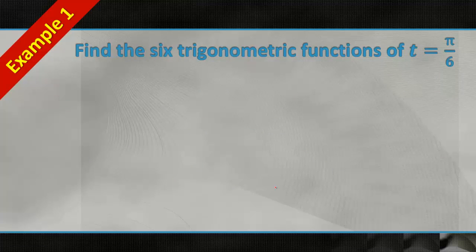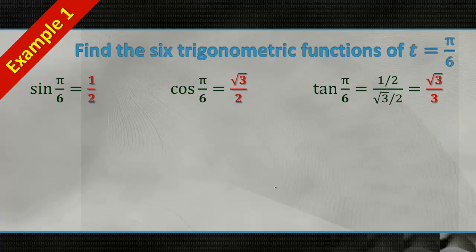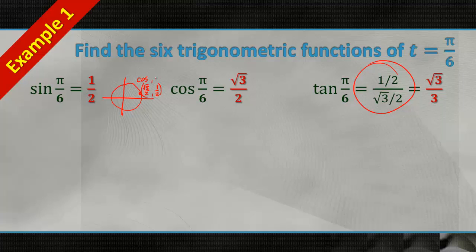Let's try to find the six trig functions of t equals pi over 6. The sine of pi over 6 equals 1/2. The cosine of pi over 6 equals root 3 over 2. For tangent, on the unit circle, pi over 6 has the point (root 3 over 2, 1/2). Tangent is y over x, so we have 1/2 over root 3 over 2, which equals 1/2 times 2/root 3, giving us 1 over root 3. Rationalizing gives us root 3 over 3.